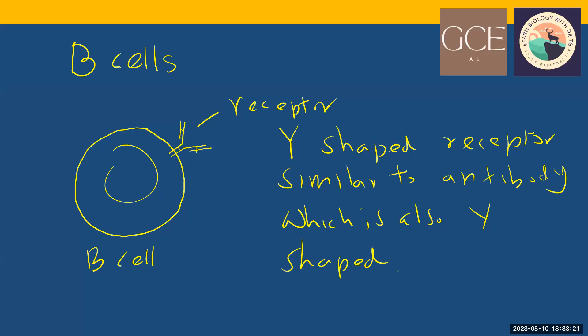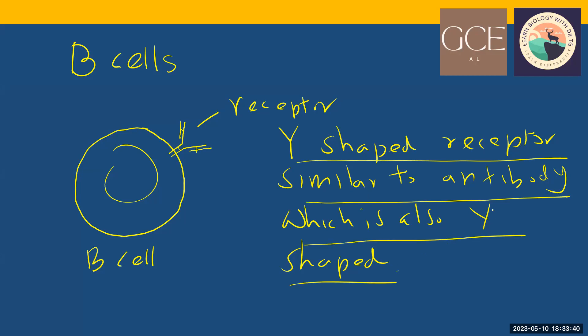The B-cell has a receptor which can identify a pathogen or antigen, and the shape of the receptor is Y-shaped. It's not H-shaped like a T-cell receptor; it has a Y-shaped receptor, similar to the antibody shape. Antibody is also Y-shaped. That's an important difference between B-cells and T-cells — the receptor is completely different.